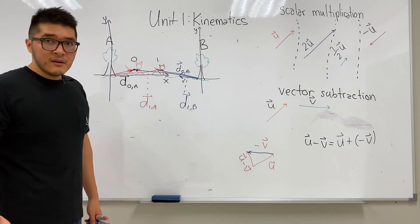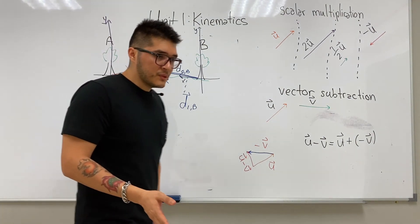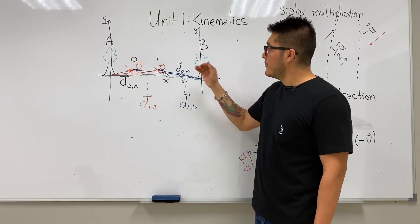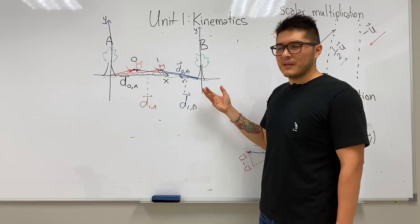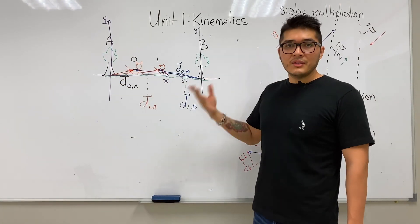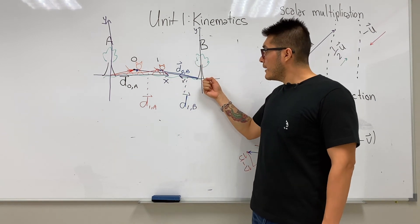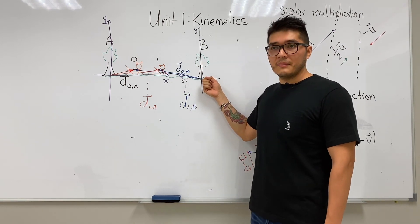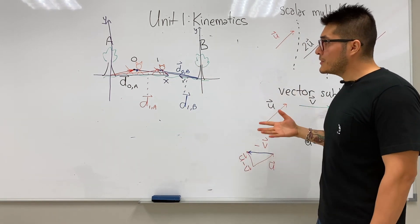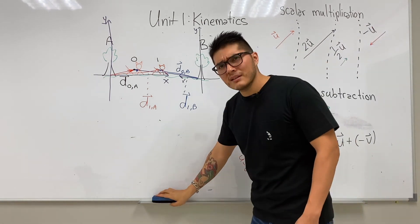We did all of this so we can figure out the solution to how to make tree a and b friends again, because right now they're saying the cheetahs are in different positions according to their coordinate system. We want them to agree on something and be friends again.